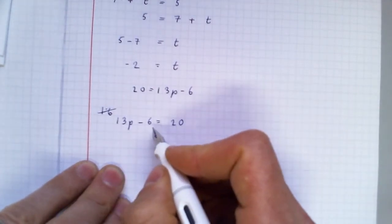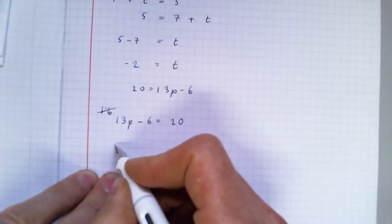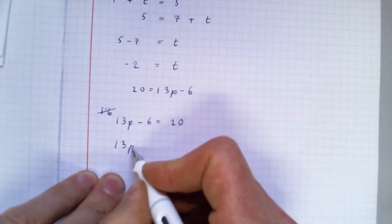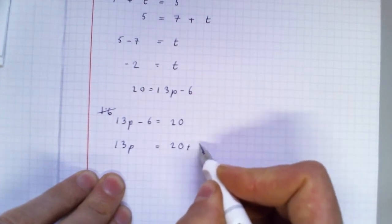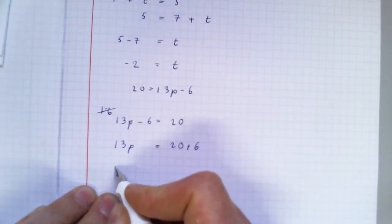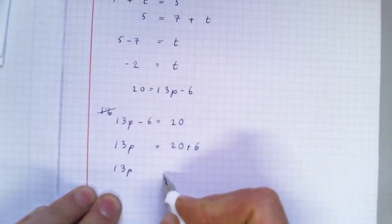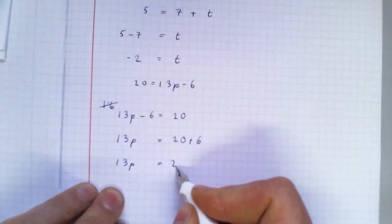Get rid of the plus minus first. So 13p equals 20 plus 6. 13p equals 26.